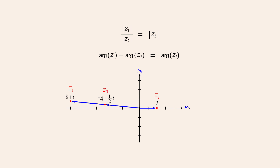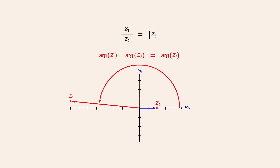The equation we derived for the moduli tells us that the length of the quotient's vector z3 should equal the length of the vector z1 divided by the length of vector z2. Since the length of vector z2 is two, dividing vector z1 by two should produce a vector one-half its length pointing in the same direction, which was the result that was produced. Likewise, the equation we derived for the arguments tells us that the angle of vector z3 should equal the angle of vector z1 minus the angle of vector z2, which is zero. And since the angle of vector z2 is zero, the angles of z1 and z3 should be equal, which is the result that was produced.